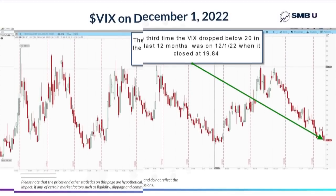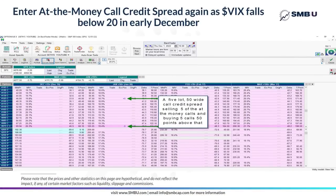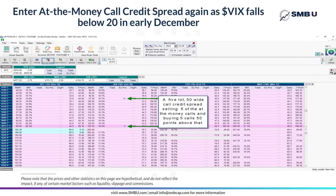The third time in the last 12 months that the VIX closed below 20 was on December 1st, 2022. And on that day, SPX closed at 4076. And so we enter an at-the-money call credit spread, expecting a bearish move, with the five short calls at 4075 and the five long calls at 4125, 50 points above, just as we did before.